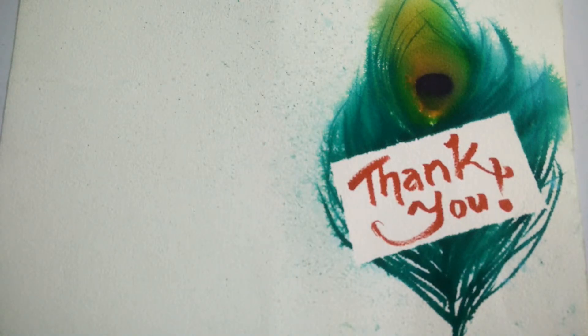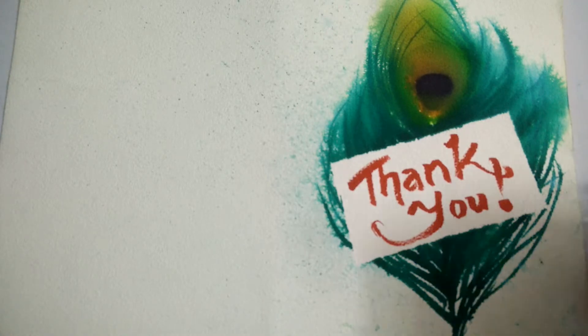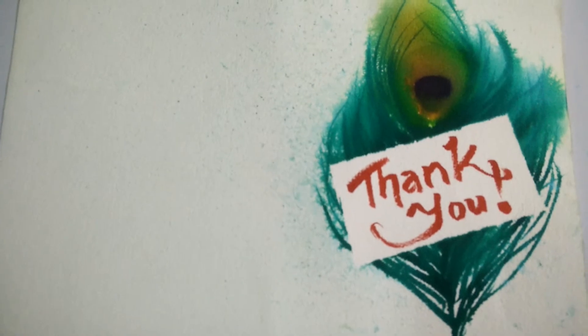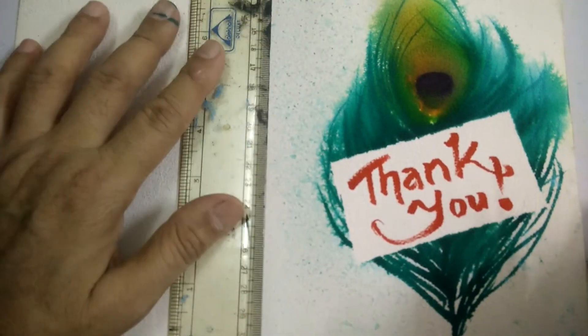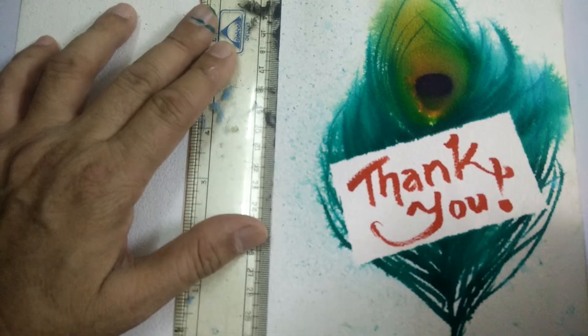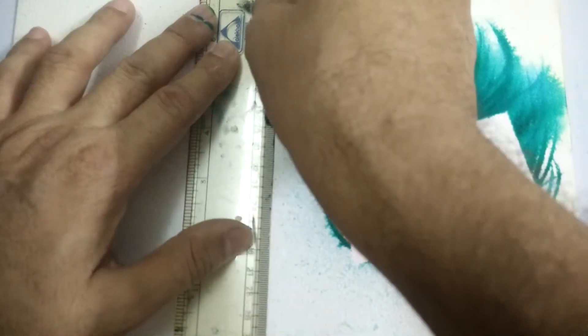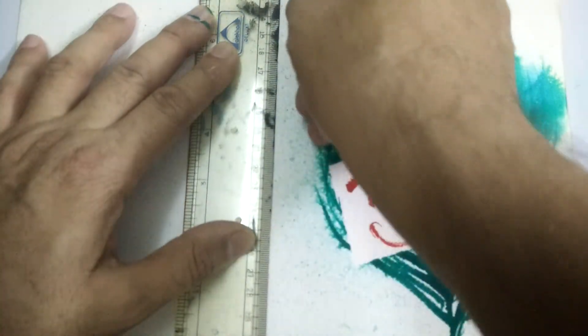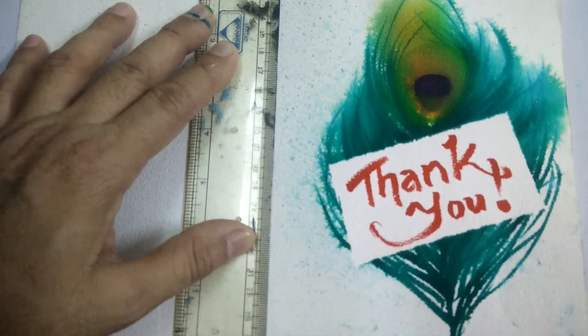Now after the card is done, I should make use of a divider and with the help of a ruler, keep the ruler on the two marks which we have started off with and scratch a line or score a line once or twice so that the fold becomes easy and accurate.